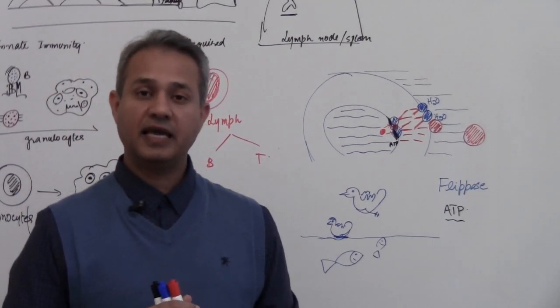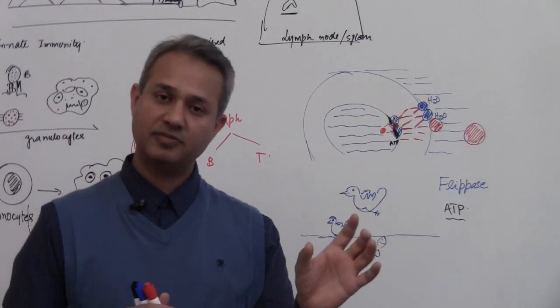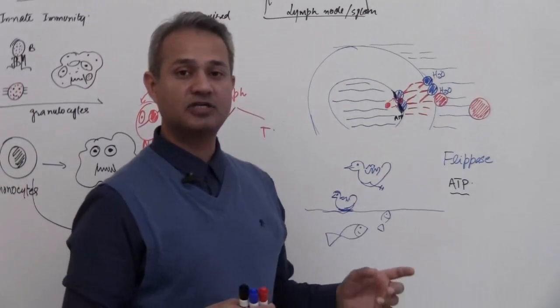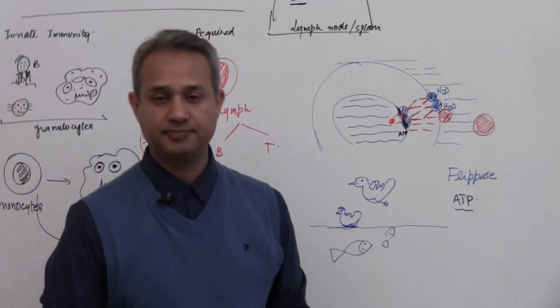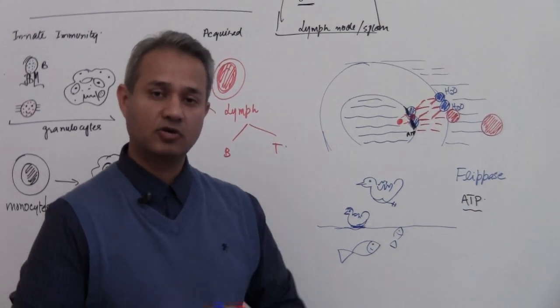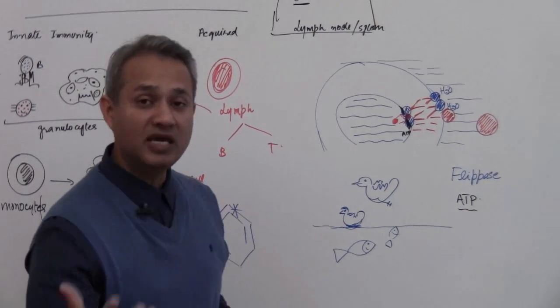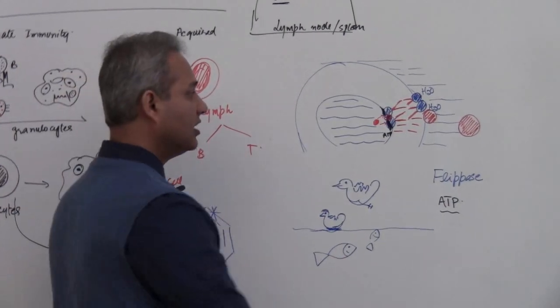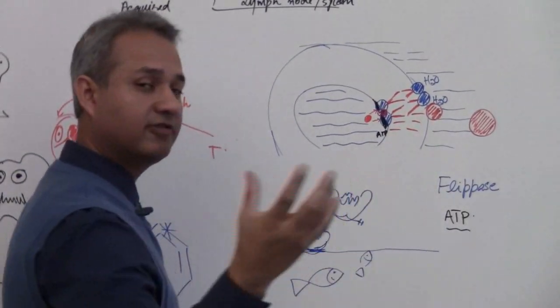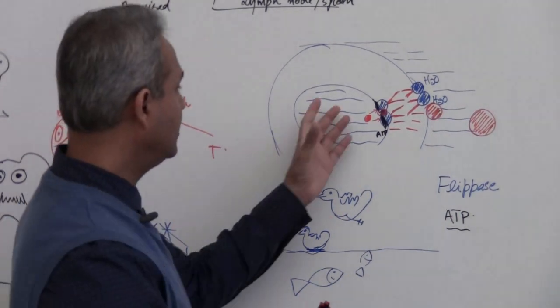So flippase sits here, uses ATP, and keeps the things on the inner side, holds on to them. This is called asymmetry. Asymmetry means non-symmetry or lack of symmetry. This is called asymmetry across the lipid bilayer. Very important concept. What that means in simple terms is the lipids or the cell membrane on the outer side has different proteins on it than on the inside.